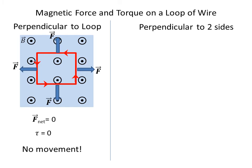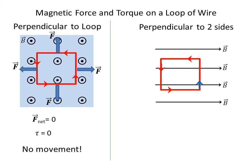But what if we now make the magnetic field perpendicular to two sides of the loop? So we put our B field like this. It's perpendicular to two sides, but parallel to two other sides.